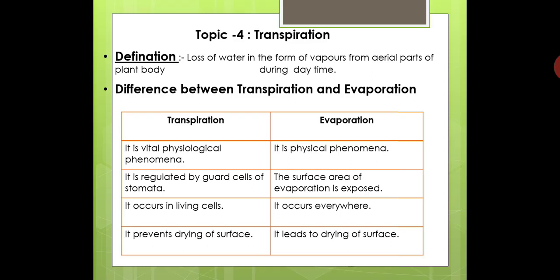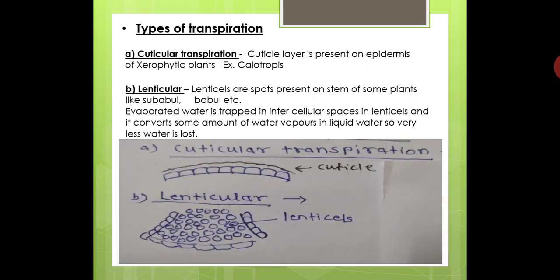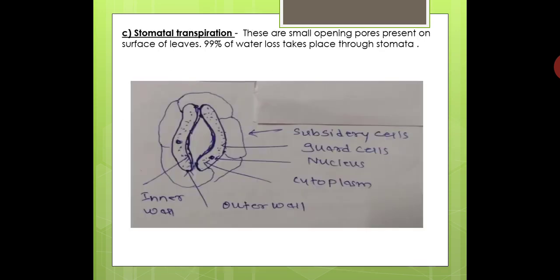The third type is stomatal transpiration, which is the most important and major type observed in plants. Stomata are small opening pores present on the upper and lower surface of leaves. At present, 99% of transpiration takes place through the stomata, while only 1% occurs by cuticular or lenticular transpiration. These are the three important types of transpiration.